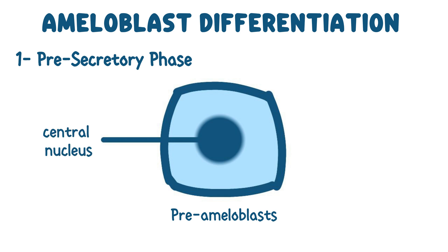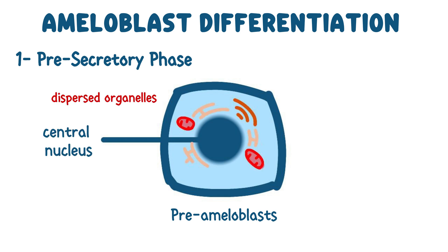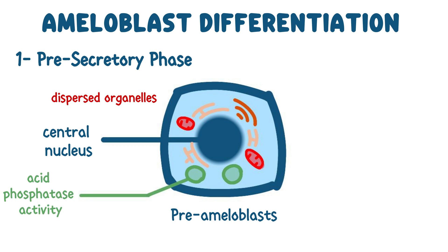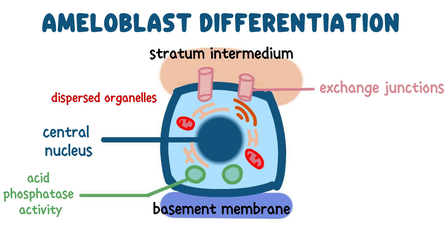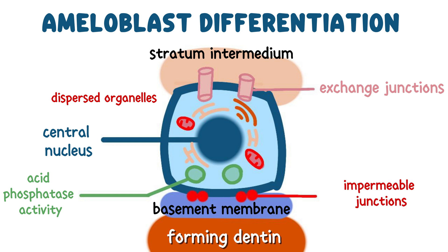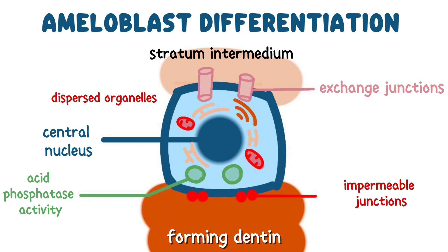The cytoplasm contains dispersed organelles and lysosomes with acid phosphatase activity. They are attached to the stratum intermedium above via exchange junctions and connected to the basement membrane below, which separates them from the forming dentin by impermeable junctions. Once the basement membrane degenerates and the pre-ameloblasts come into direct contact with the forming dentin, the cells stop dividing and differentiate into secretory ameloblasts.